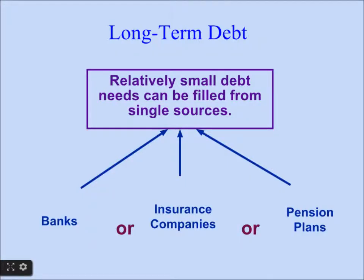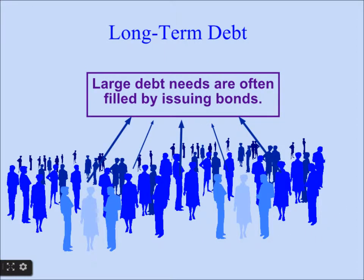Relatively small debt needs can be filled from a single source, which is a bank. We can take a loan from the bank or insurance companies — we can buy insurance and pension plans. Large debt needs are often filled by issuing bonds, so companies issue bonds to fill the needs of large debt.